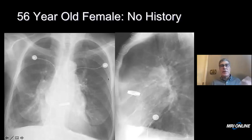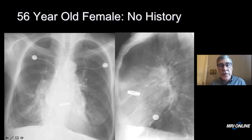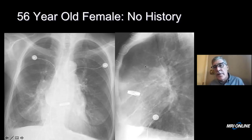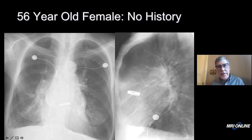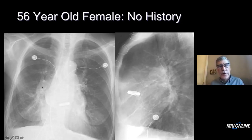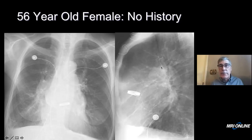Looking at this patient with no history: the vessels are dilated in the upper lobes but very constricted in the lower lobes — this is not shunt vascularity, it is evidence of cephalization. The main pulmonary artery is large, and the pulmonary arteries on the lateral are large. There is pulmonary hypertension — you say large pulmonary arteries, pulmonary hypertension.